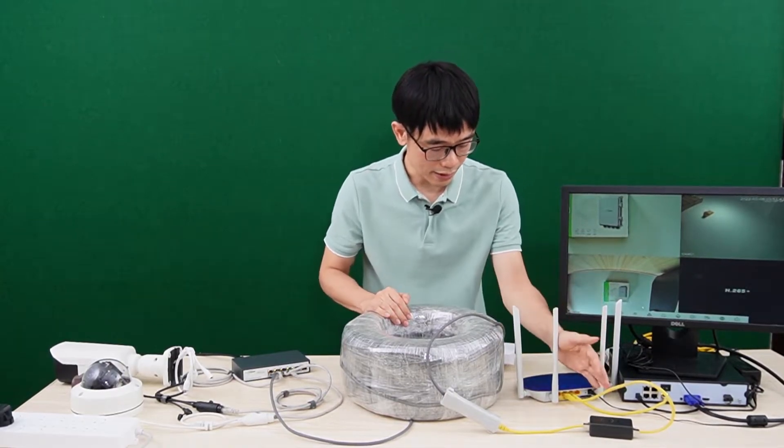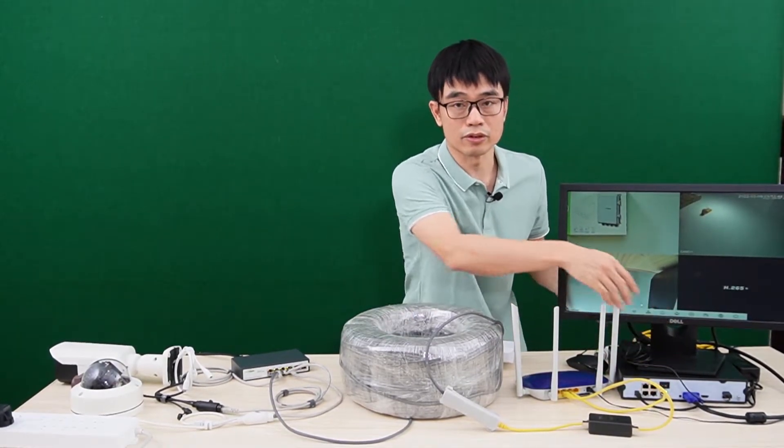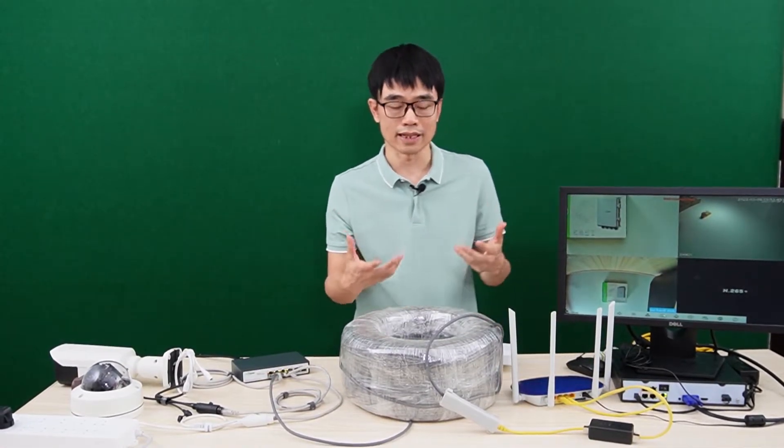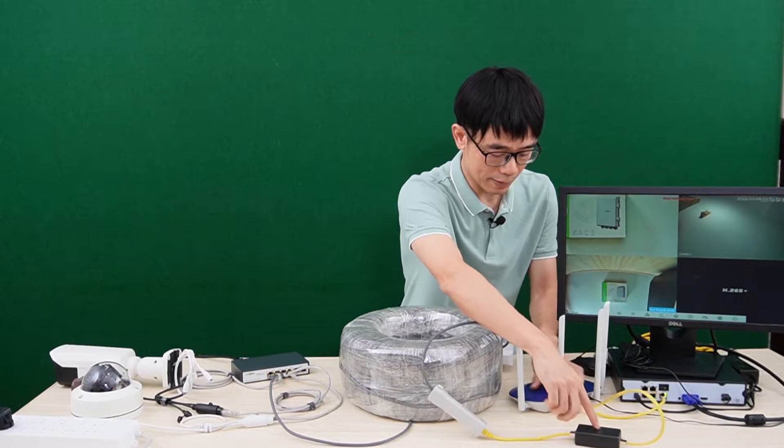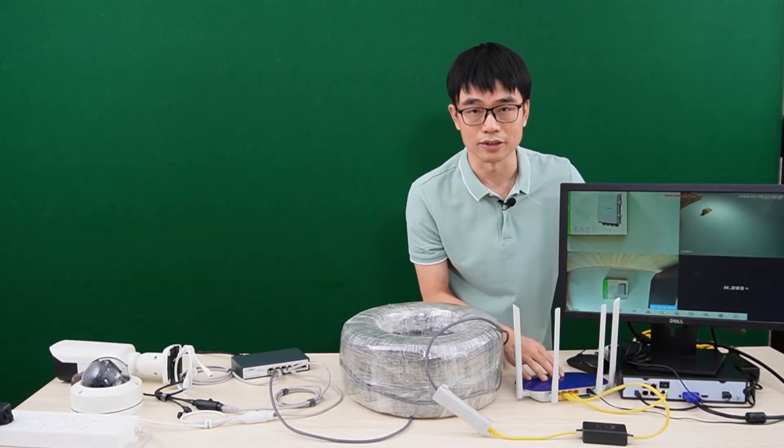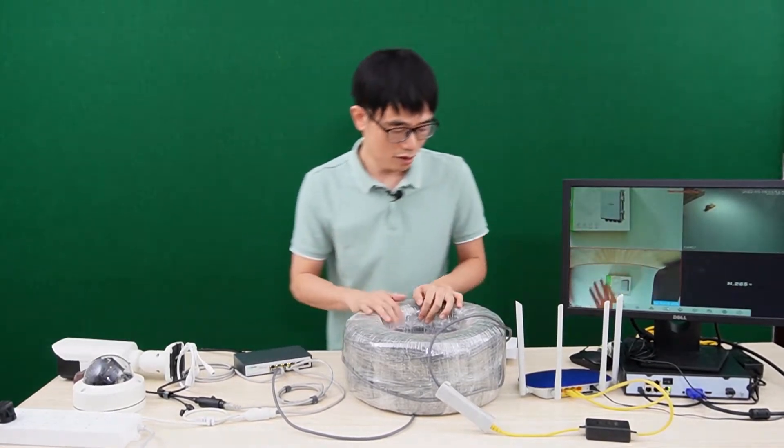This cable used to connect to the network video recorder. Since we need the network, we're adding a router. This router provides Ethernet access, and both these cables connect to one of the router ports. Now the network video recorder also connects to this router, and the camera is still live.